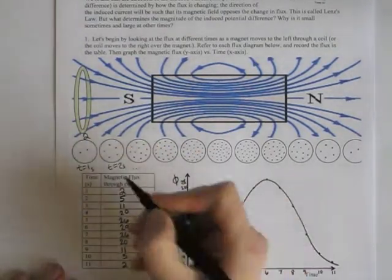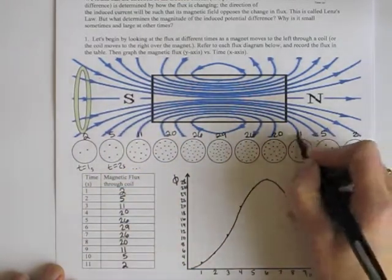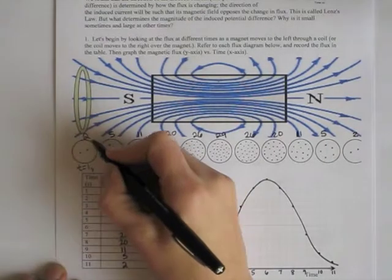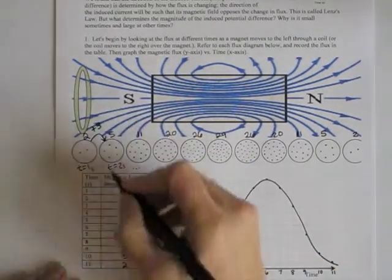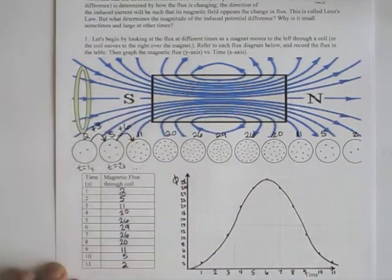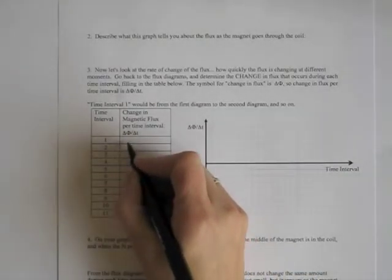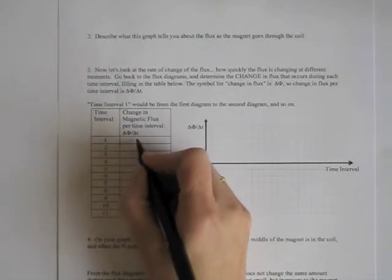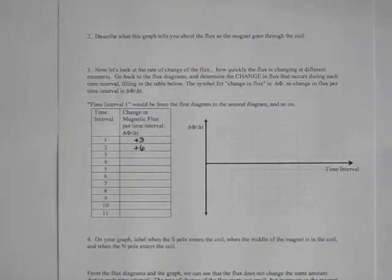The flux values were 2, 5, 11, 20, and 26. What we're looking for is the change in flux. From the first diagram to the second, we had a change of plus 3. From the second to the third, we had a change of plus 6 — it went from 5 to 11. For the first time interval, from 1 second to 2 seconds, the change in flux was plus 3. The next one was plus 6. If the flux decreases, you would have a negative value. Go ahead, pause the video, and complete your chart.